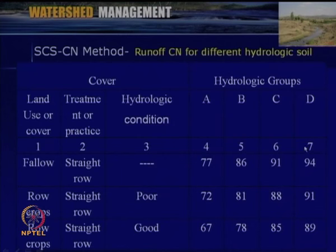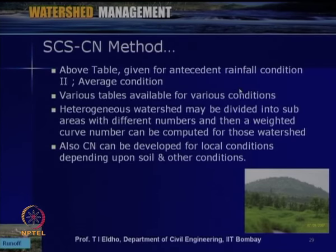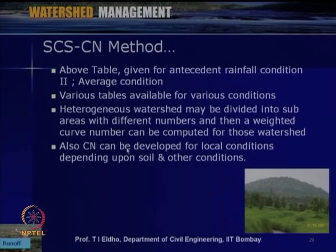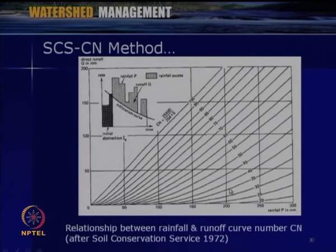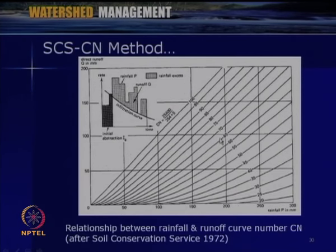For given hydrologic soil groups and antecedent moisture conditions, the SCS curve number manual provides curve numbers for various land use, land cover, treatment practices, and hydraulic conditions — varying from 0 to 100. A heterogeneous watershed may be divided into sub-areas with different curve numbers, then a weighted curve number is computed. These tables are given in most hydrology textbooks; the chart was developed by the Soil Conservation Service manual 1972.